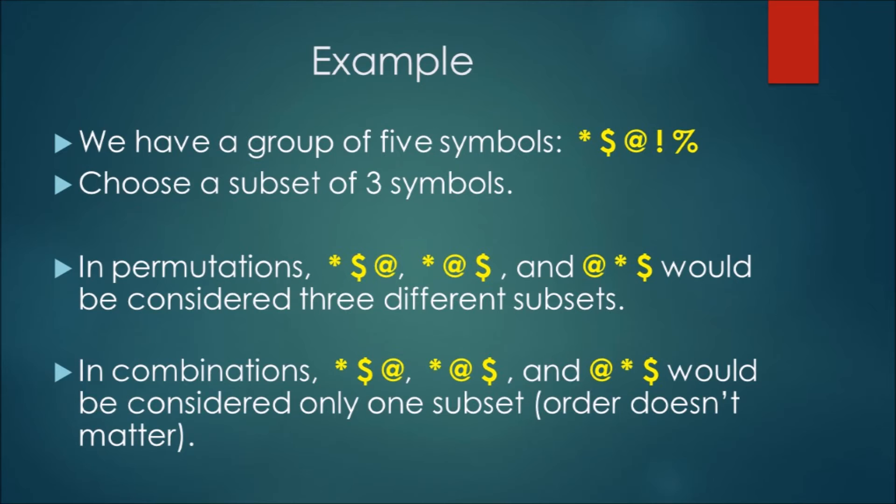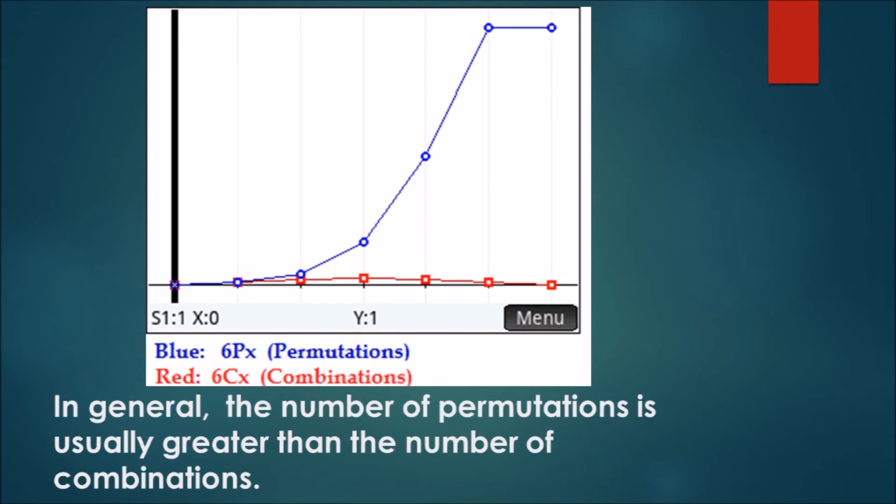For combinations, order does not matter. So the three above mentioned subsets would be considered the same subset. In general, the number of permutations is usually greater or equal to than the number of combinations.